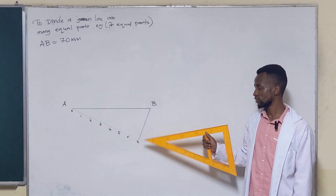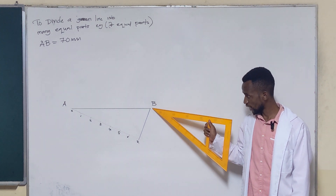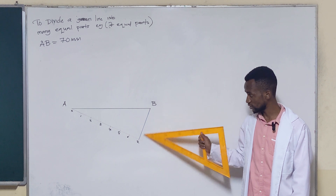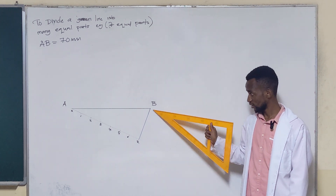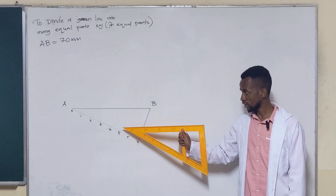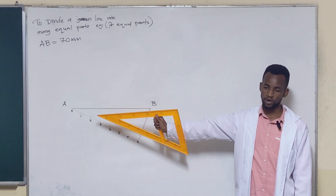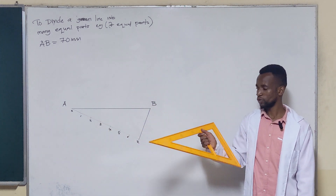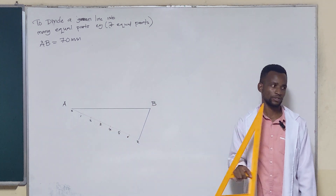Now the next step is to draw lines that are parallel to this line — at each of the marked points along the slant line — until you reach the last point, which is point one. So how do we draw a parallel line? Here we use the set squares.